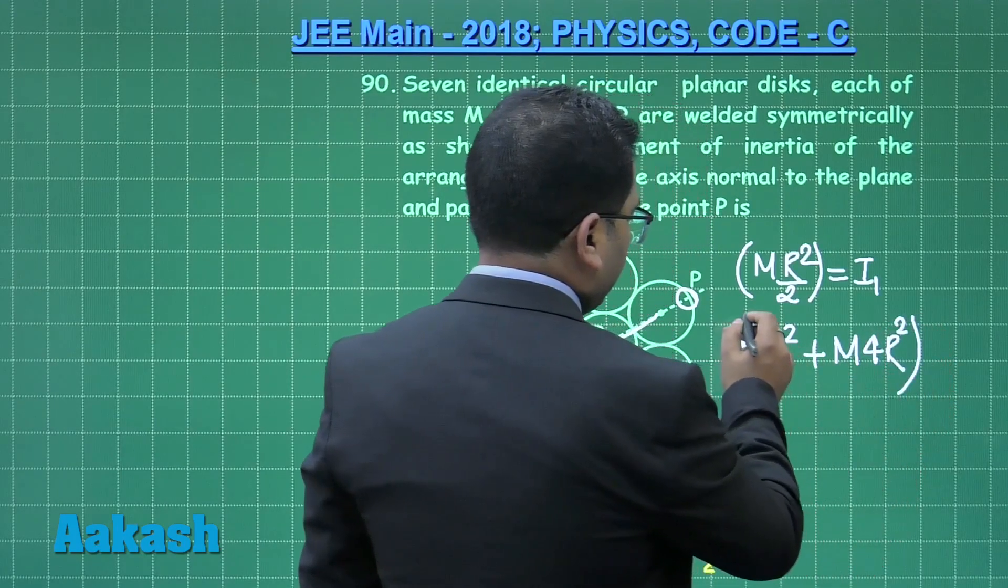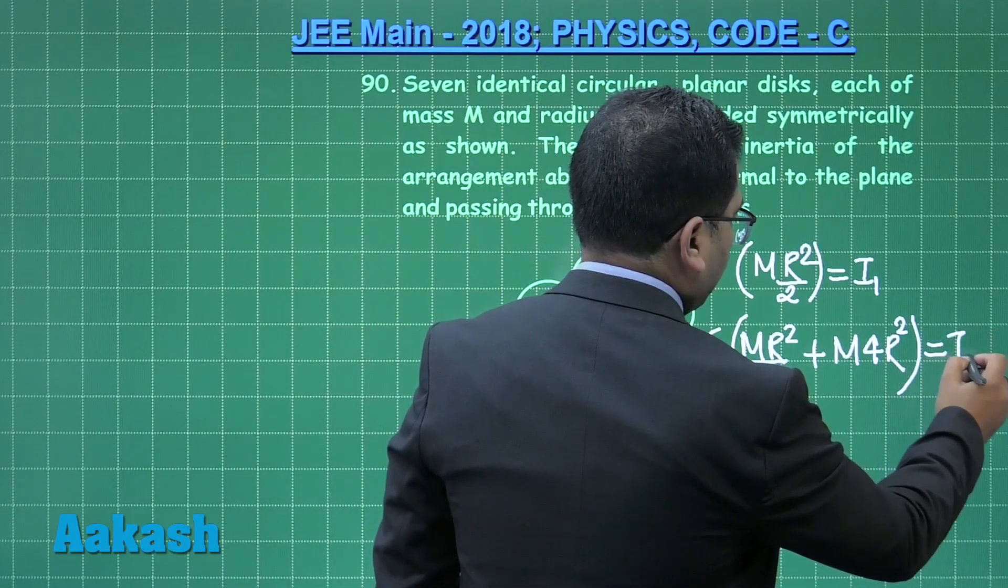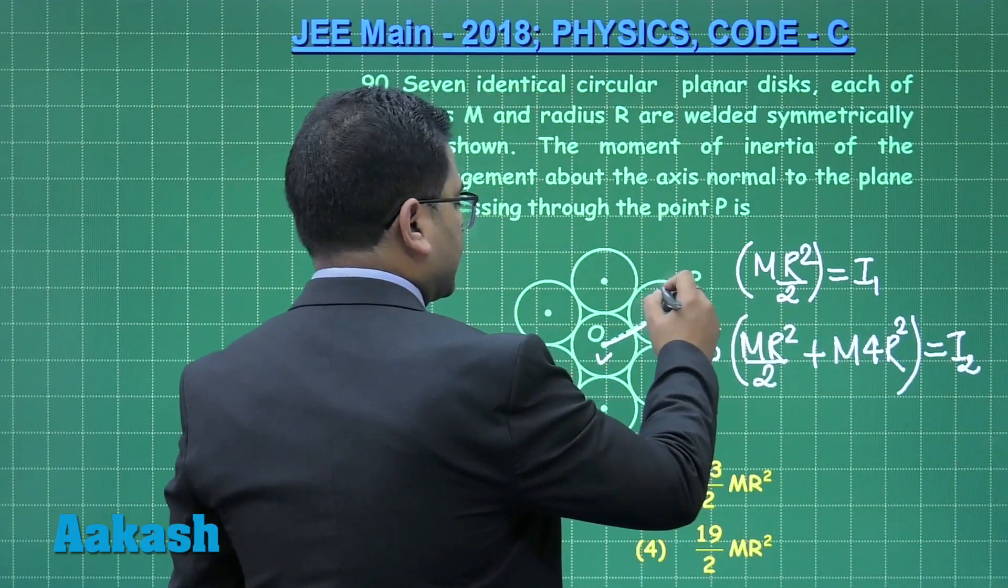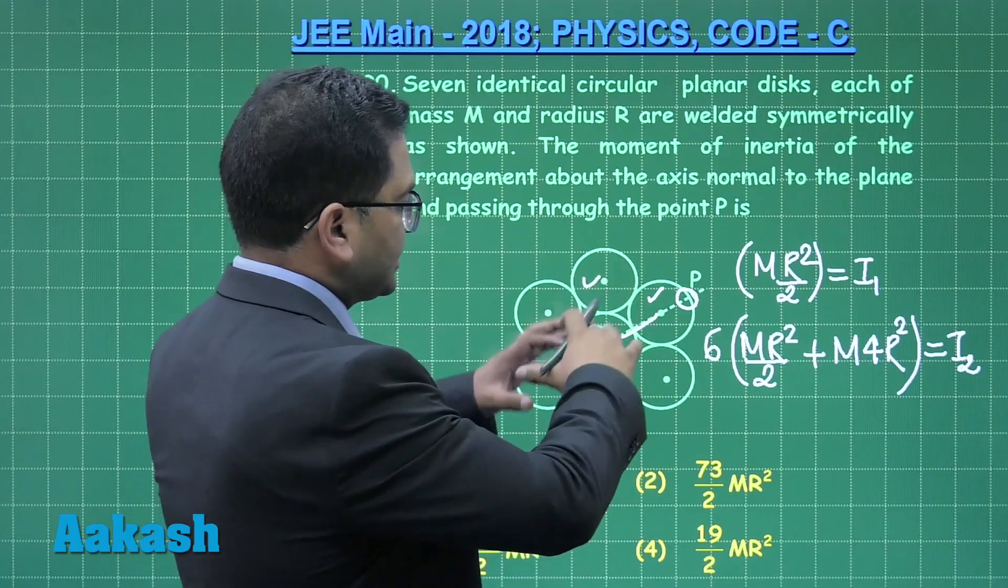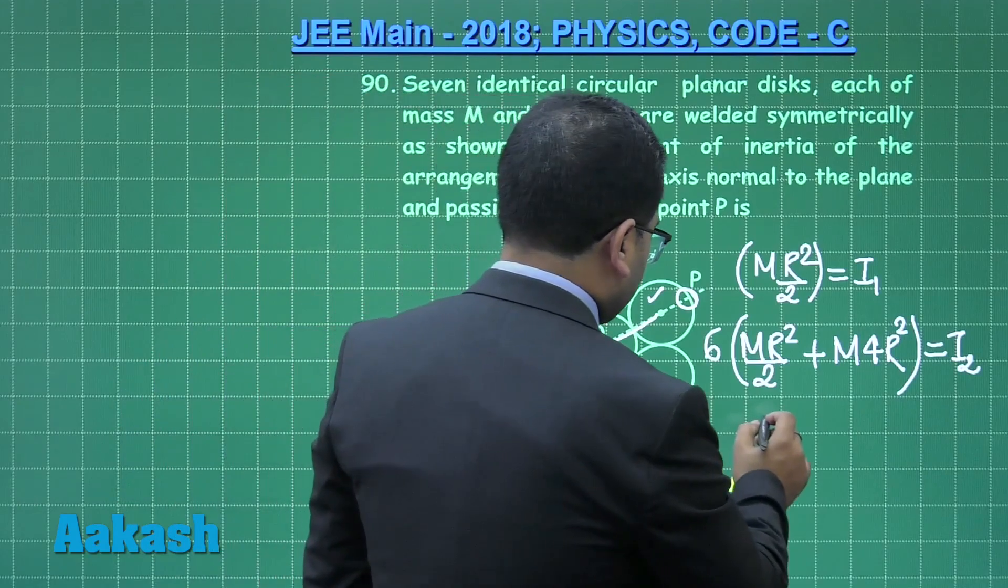And there is a perpendicular distance of 2r, plus m(2r)² is going to be m·4r². Multiplied by six would be equal to I₂, because what is valid for this is valid for this. So there are six such arrangements and the total moment of inertia about O is going to be I₁ plus I₂.